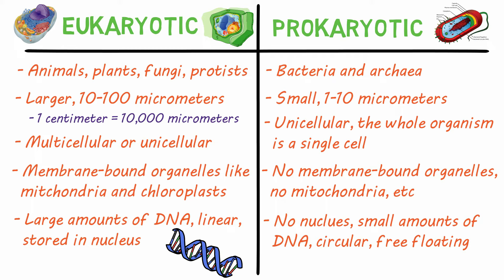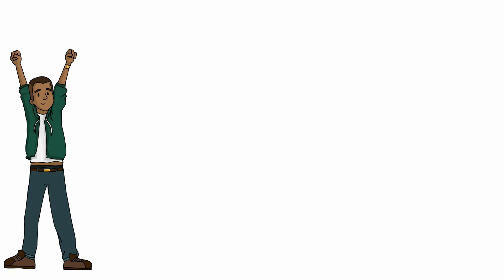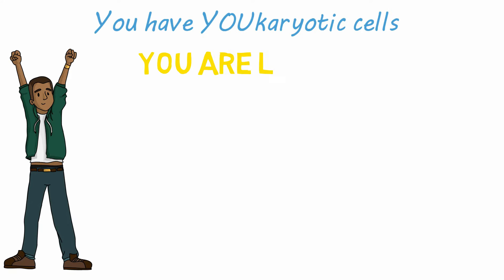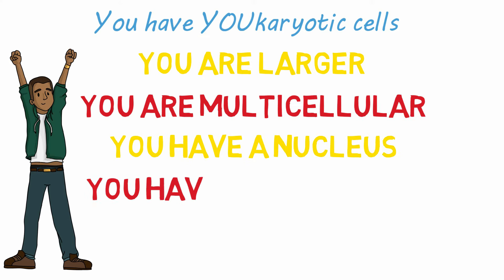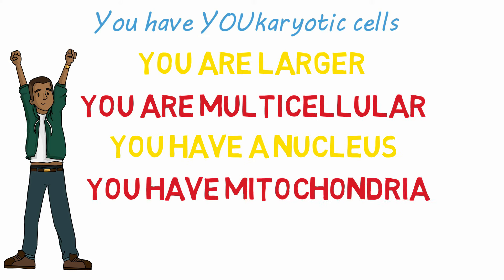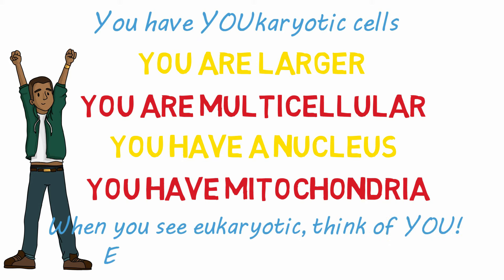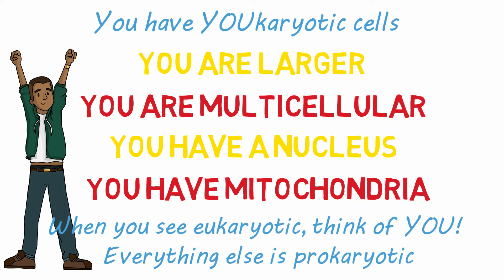So now you know the differences, but how are you going to remember them? Just remember that you are eukaryotic. You have eukaryotic cells. You are larger, you are multicellular, you have a nucleus, and you have mitochondria. So when you see eukaryotic, just think of you, and everything else is prokaryotic.